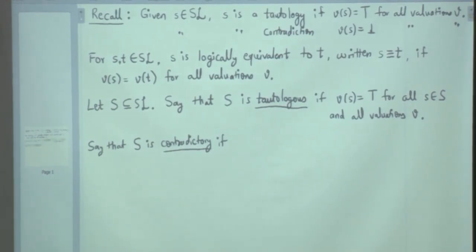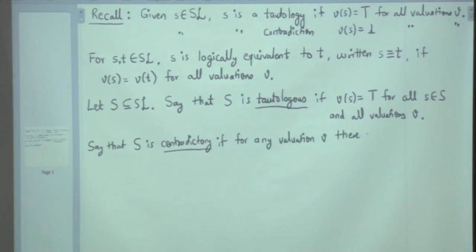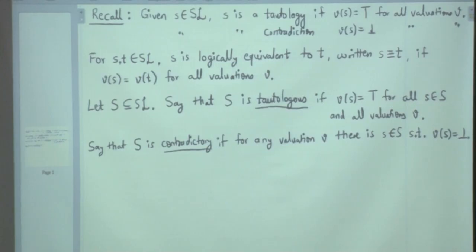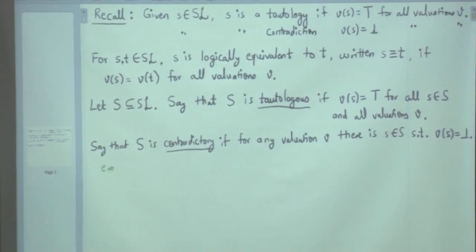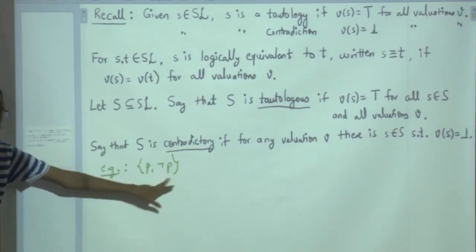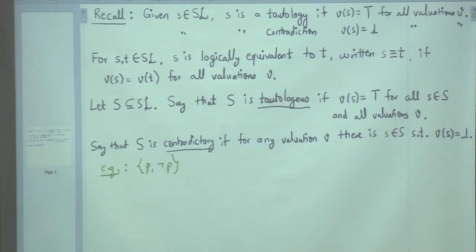For example, {P, negation P} is contradictory. You can see that if a valuation makes P true then negation P is false, and if a valuation makes P false then P is false. So together it is contradictory. In terms of the Lindenbaum-Tarski algebra, these two elements — P and negation P — will generate the full Boolean algebra as a filter.